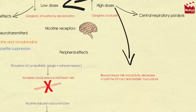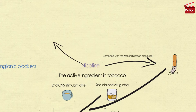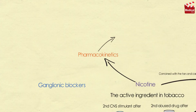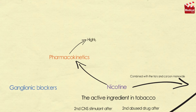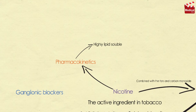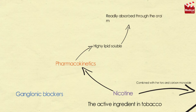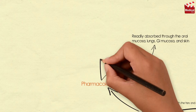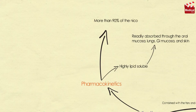At higher doses, blood pressure falls and activity decreases in both the GI tract and bladder musculature as a result of a nicotine-induced block of parasympathetic ganglia. Regarding the pharmacokinetics of nicotine: because nicotine is highly liposoluble, it is readily absorbed through the oral mucosa, lungs, GI mucosa, and skin. More than 90 percent of the nicotine inhaled in smoke is absorbed.